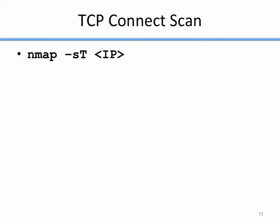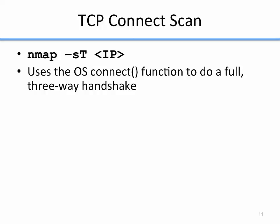The first is a TCP connect scan. The syntax is 'nmap -sT' followed by the IP address to scan. A connect scan uses the operating system's connect function to do a full three-way handshake. You initiate the SYN, they reply with the SYN-ACK, you reply with the ACK — it's a full connection.